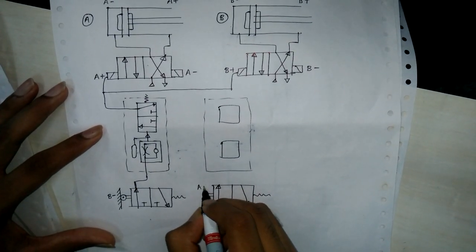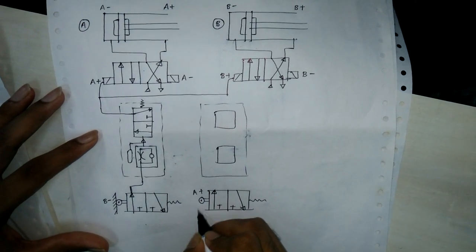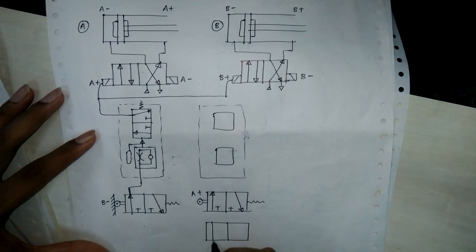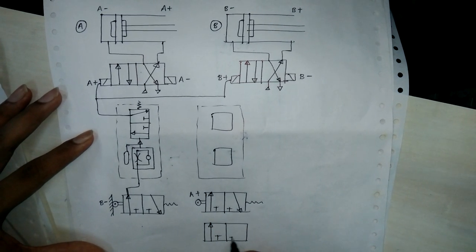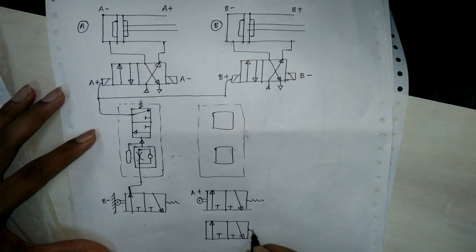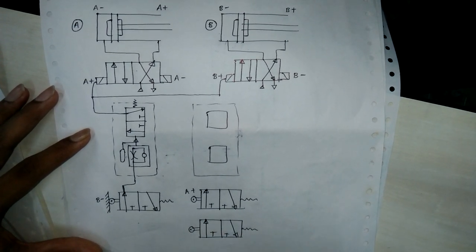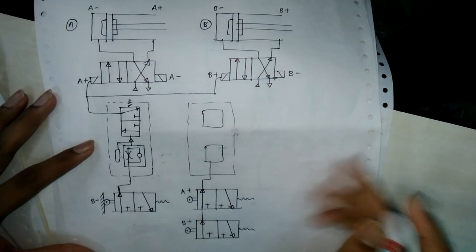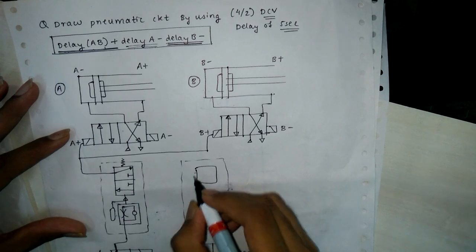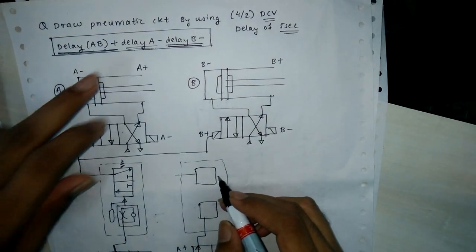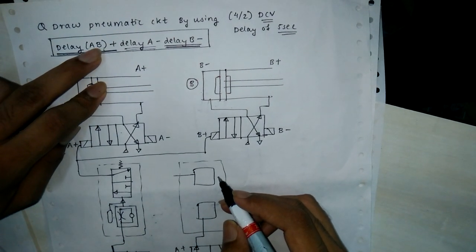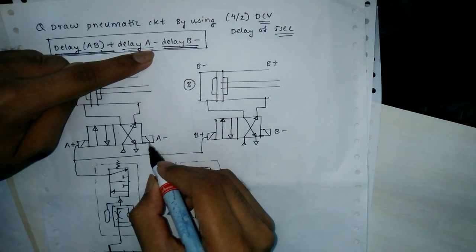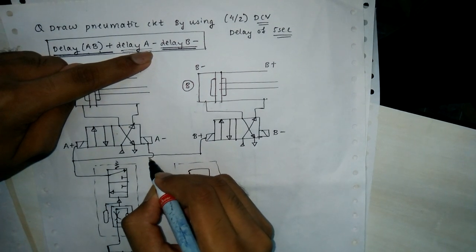This is your A+. Because it is plus, we don't have to fix this one. This is for B+, having a spring. B+ will be connected like this, and this term will be connected to A- — which is the term of A-. The connection will be like this.